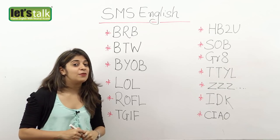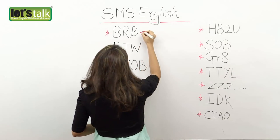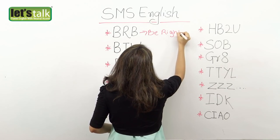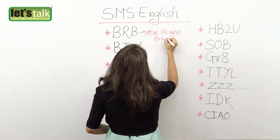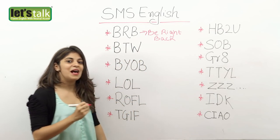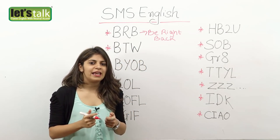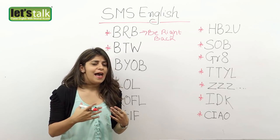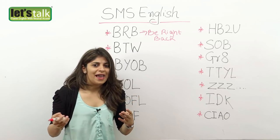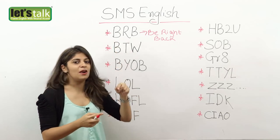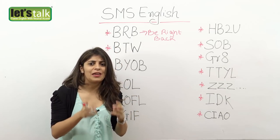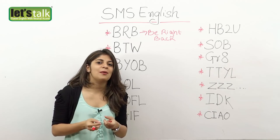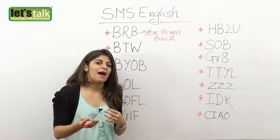Now we have BRB, which means 'be right back.' There are times when you are writing and you just want to be fast and concise, save your time and not use a lot of space. So you quickly say BRB — this means I'll be right back. It means you are taking a break from the chat and you will be back shortly.